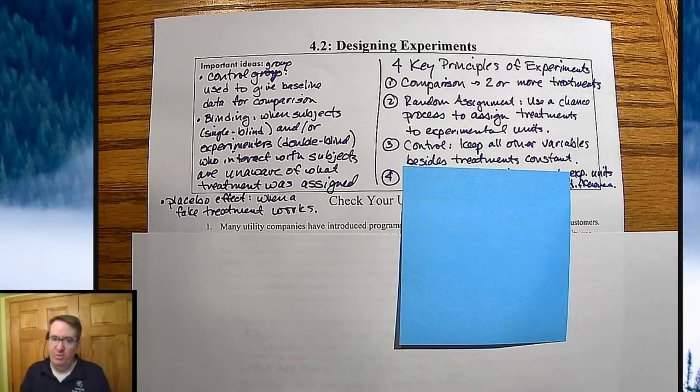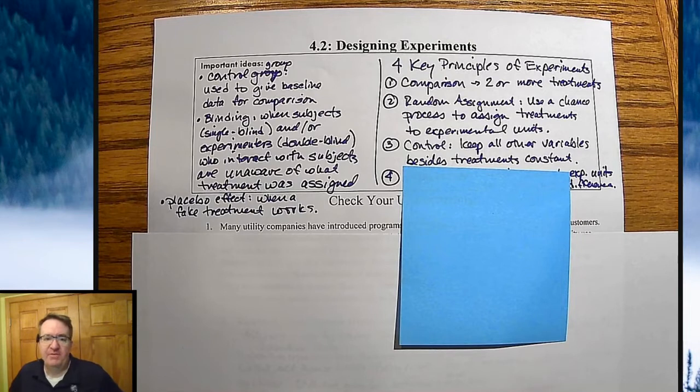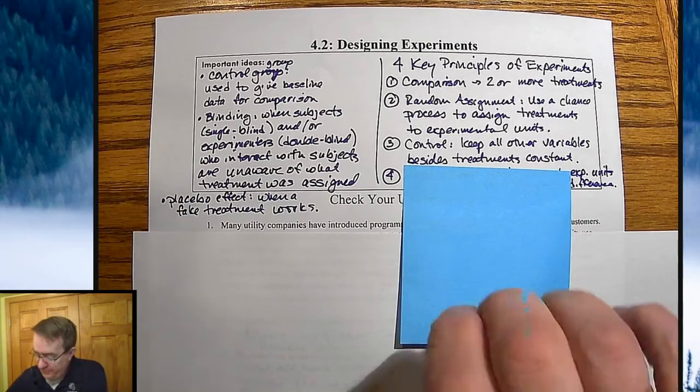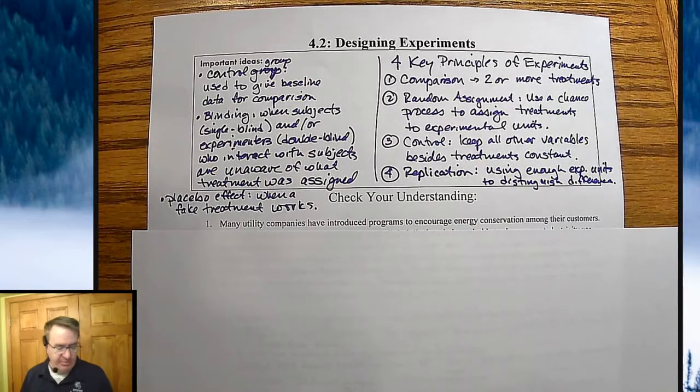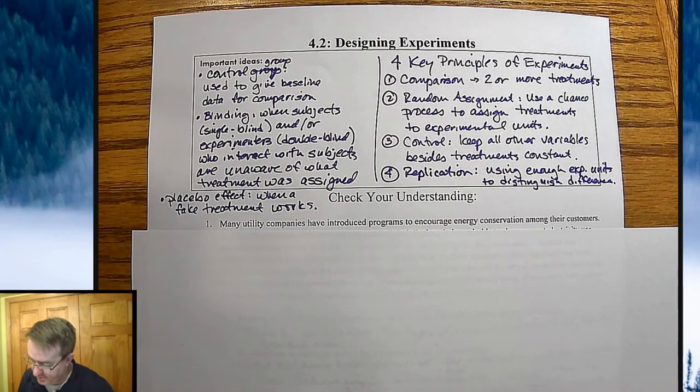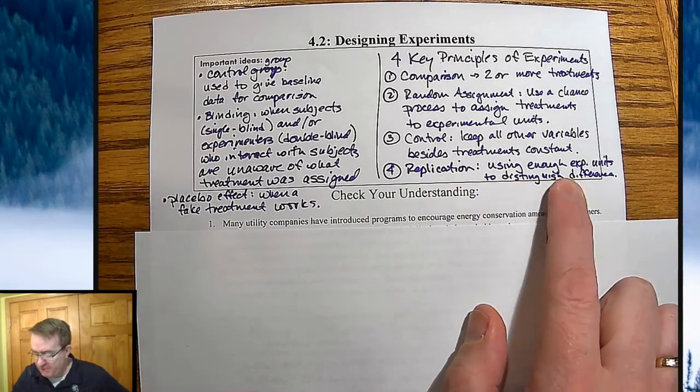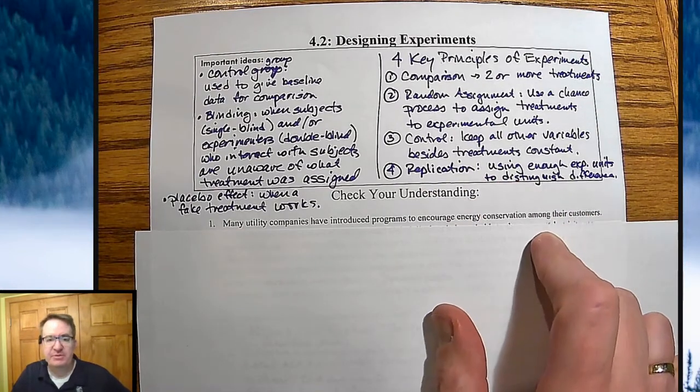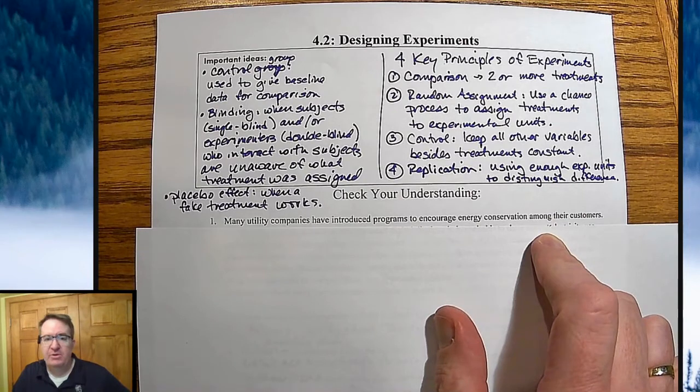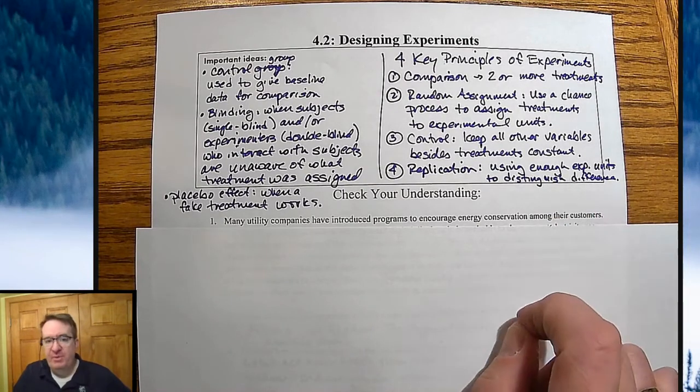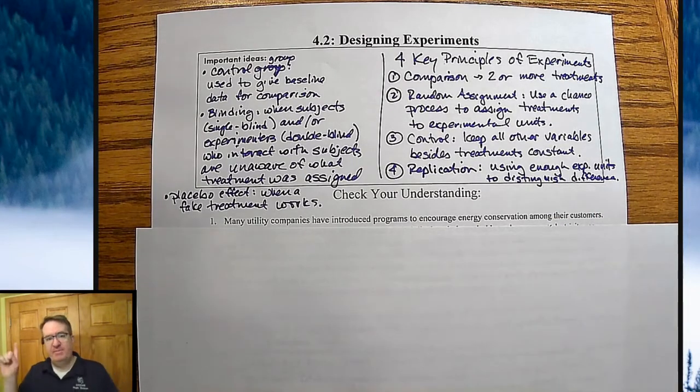Is it perfect? No. But if you're dealing with a larger group type of experiment where you've got 50, 100, thousands of people, that's all going to even out. And that's why the control group and the random assignment is so important. And then lastly, replication. And that's also kind of building on this, using enough experimental units to distinguish the differences.